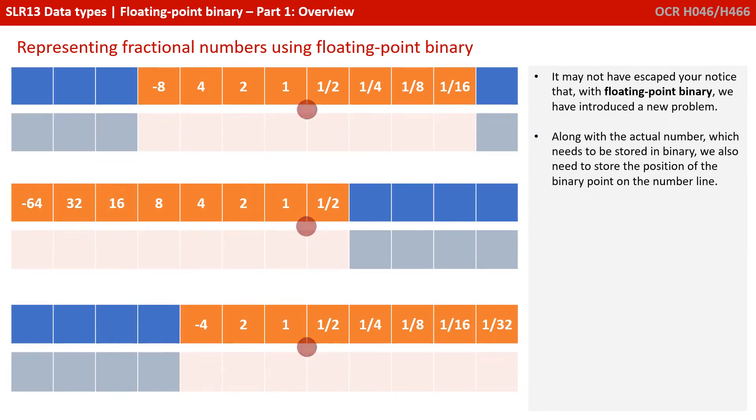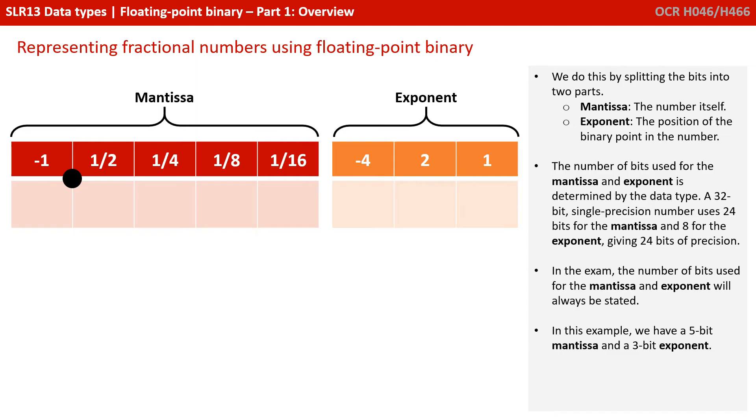Now, it may not have escaped your notice that with floating point binary, we've actually introduced a new problem. Along with the actual number, which we need to store in binary, we also need to store the position of the binary point on the number line. We do this by splitting the bits into two parts. The mantissa, which is going to represent the actual value of the number itself, and an exponent, the position of the binary point within that number. The number of bits used for the mantissa and exponent is determined by the data type. A 32-bit single precision number uses 24 bits for the mantissa and 8 for the exponent, giving 24 bits of precision.